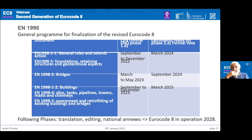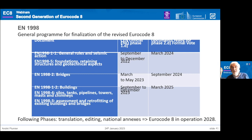Professor Plumier shares a table on the timeline. For the main buildings parts — Part 1-1, 1-2, and Part 2 — the formal inquiry phase ran from March to May 2023, with documents ready for formal vote in September 2024. For other parts — silos, assessments, Part 1-2, Part 4, and Part 3 — the inquiry phase will be from September to December 2023, with documents ready for formal vote in March 2025. Following approval, there remain phases of translation, editing, and development of national annexes. The estimation is that the new Eurocode 8 will be in operation by 2028.